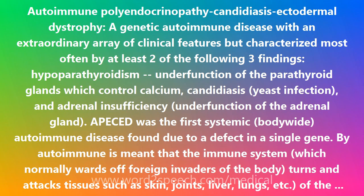The child with APECED develops problems in numerous glands — polyglandular — including hypoparathyroidism, hypogonadism with sex gland failure, adrenal insufficiency, type 1 insulin-dependent diabetes with insufficient insulin production by the pancreas gland, and latent hypothyroidism, underfunction of the thyroid gland.